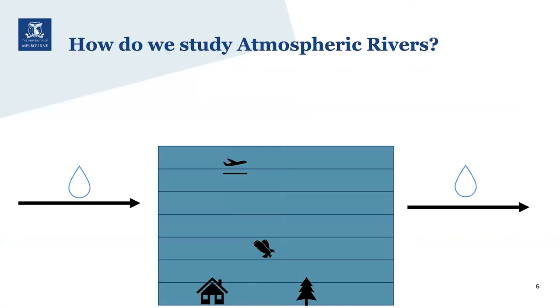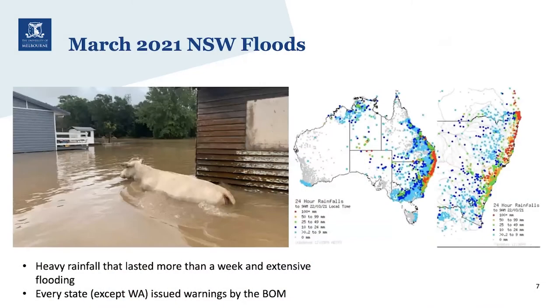IVT is measured in units of kilograms per metre per second, and we consider an IVT region to be enhanced — and therefore an atmospheric river — when it exceeds 250 kilograms per metre per second. During my PhD, I was studying these atmospheric rivers when in March of 2021 there was a bunch of extreme rainfall and flooding across most of Australia.